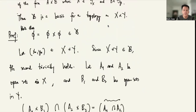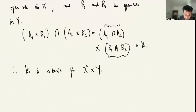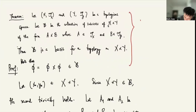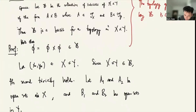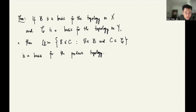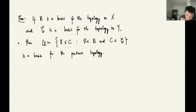Now let's have this next theorem. If script B is a basis for the topology on X, and script C is a basis for the topology on Y, then the collection script D — the set of all B×C where B is in script B and C is in script C — is a basis for the product topology on X×Y.